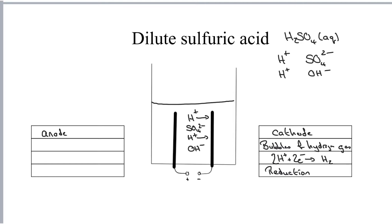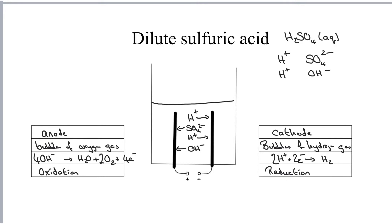At the anode, sulfate ions and hydroxide ions are attracted. Hydroxide ions lose their electrons more easily and therefore are oxidized more easily than sulfate ions — so at the anode we get bubbles of oxygen gas, which would relight a glowing splint. It's the hydroxide ions that are oxidized: four OH- ions give O2 plus two H2O, losing four electrons, and this is oxidation. So that's the electrolysis of dilute sulfuric acid, sometimes called acidified water, where we get hydrogen and oxygen.